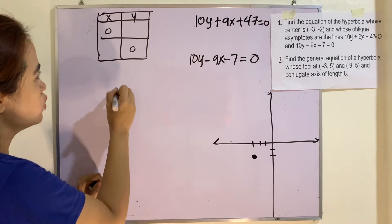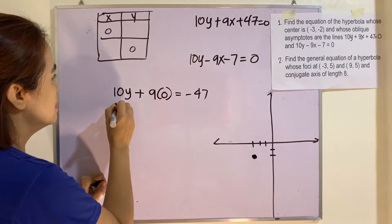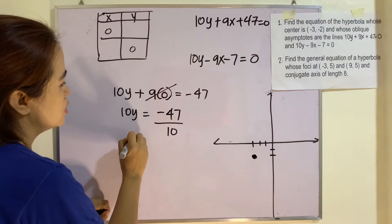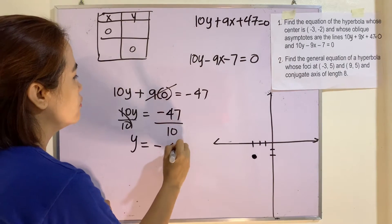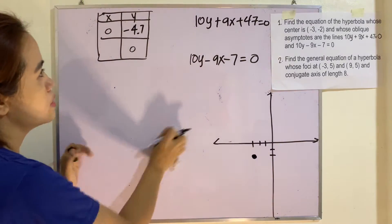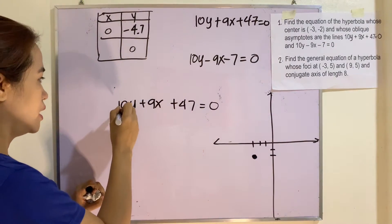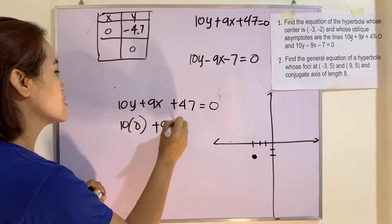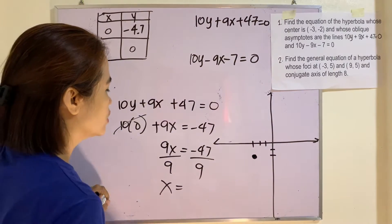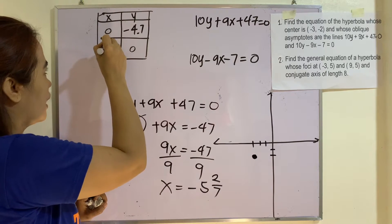For equation 1, letting x equal 0: 10y plus 9 times 0 equals negative 47, so 10y equals negative 47, giving y equal to negative 4.7. Now for x, letting y equal 0: 10 times 0 plus 9x equals negative 47, so 9x equals negative 47, giving x equal to negative 5 and 2 over 7.